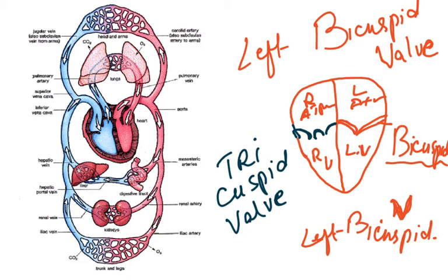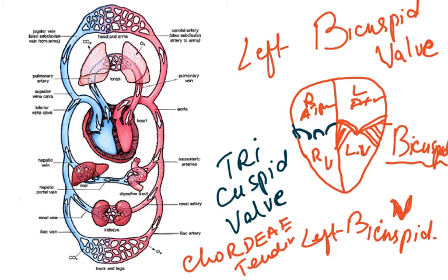These valves are held in place by chordae tendinae — thread-like structures which hold them in place. Chordae tendinae are difficult to remember, but 'tendon supporting valves' is also acceptable. These thread-like structures hold the flaps so they don't turn inside out or flap back into the atria — they are held down in place.